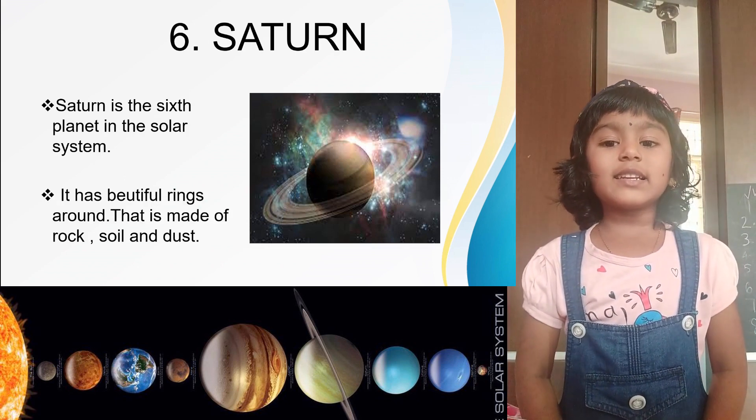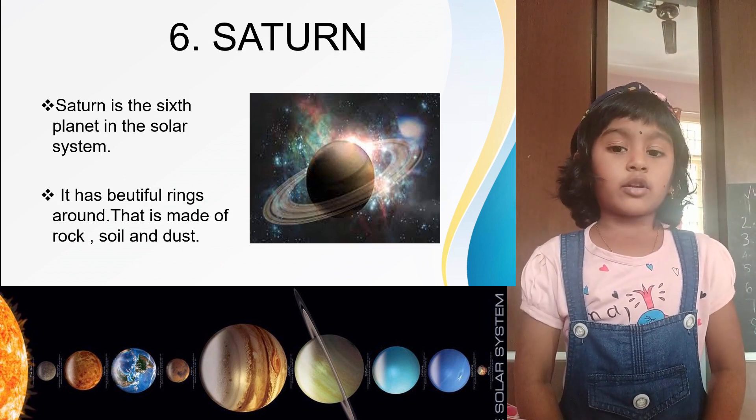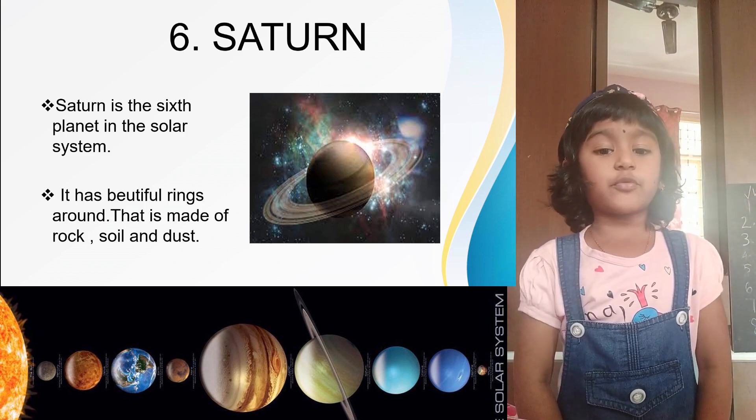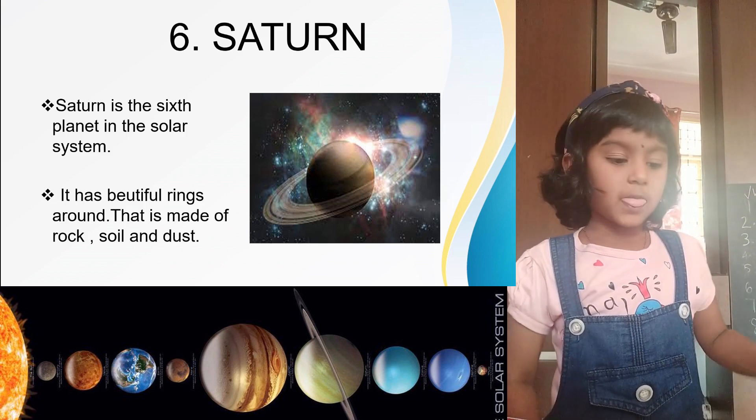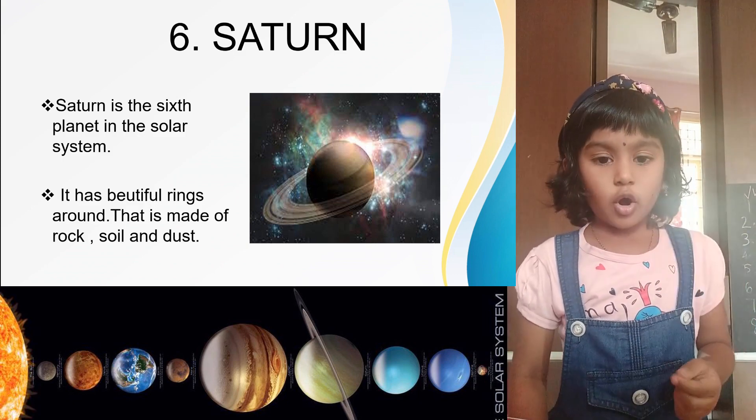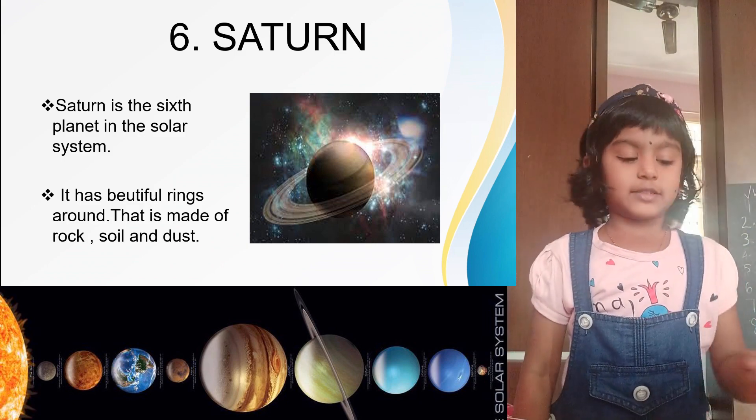Saturn. Saturn is the sixth planet of the solar system. It has beautiful rings around Saturn that is made of soil, rocks, and dust.